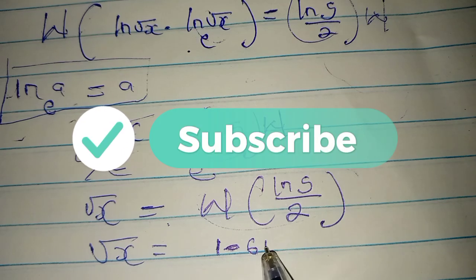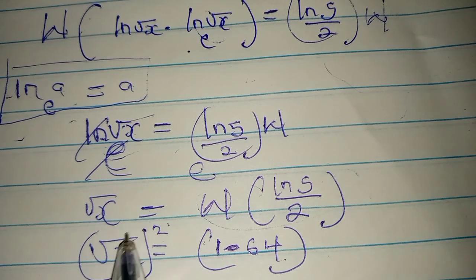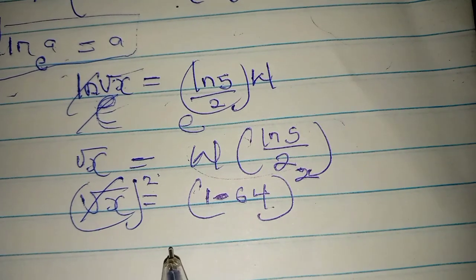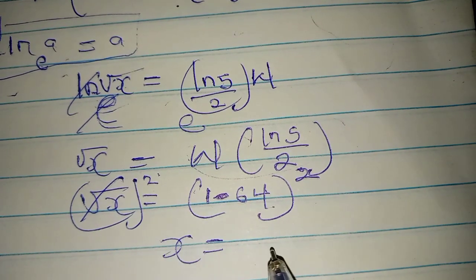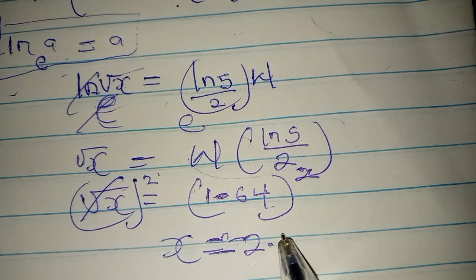So square both sides in order to get the value of x. Therefore, x equals approximately 2.7. So this is the value of x.